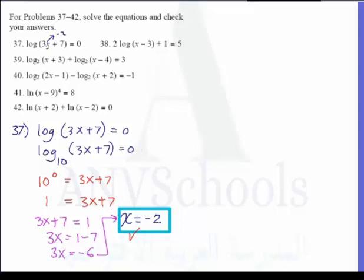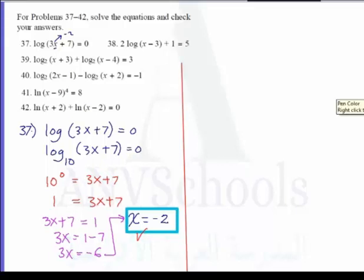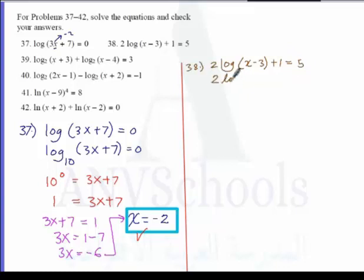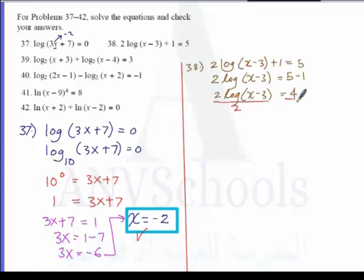Now we go to number 38, which states: 2 log of x minus 3 plus 1 is equal to 5. Subtracting 1 from both sides gives 2 log of x minus 3 equals 4. Dividing both sides by 2 gives the simplified expression log of x minus 3 is equal to 2.